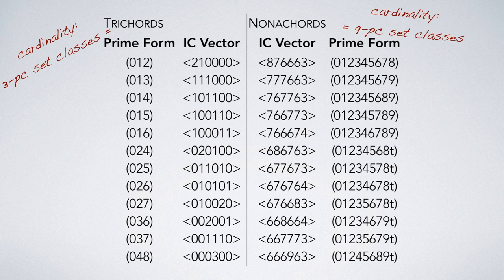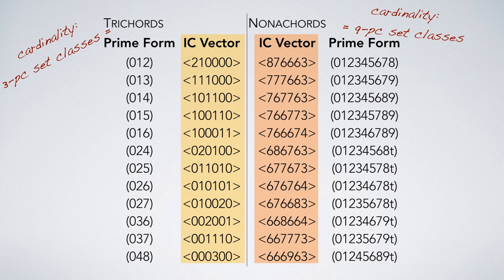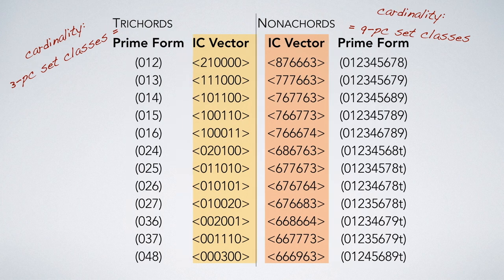Prime form for each set class is shown in parentheses. The interval class vector next to each set class's prime form is particularly valuable. Think of it as a numeric representation of the intervallic flavor of each set class. Interval class vectors have six digits placed between angled brackets.